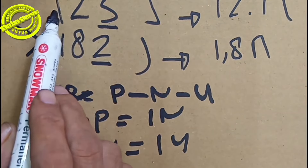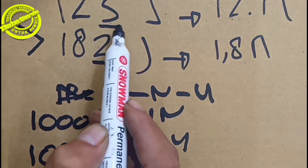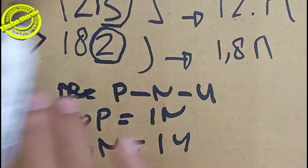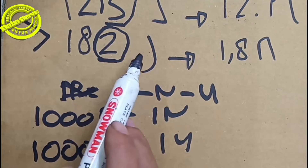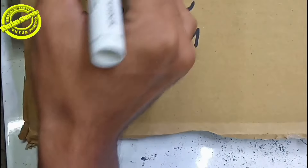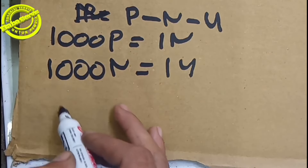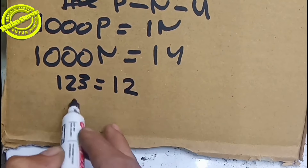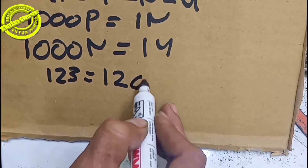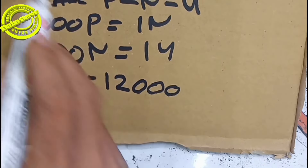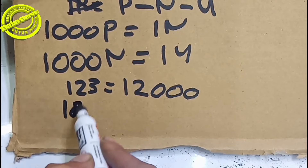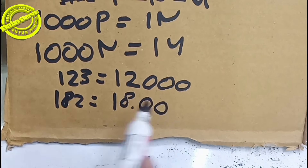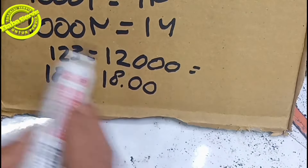Bukan angka nomor tiga, tapi angka yang ketiga. Pada kode tiga digit kapasitor, angka yang ketiga adalah yang menyatakan banyaknya bilangan nol. Itulah mengapa '123' lebih besar dari '182'. Jika dijabarkan: '123' = 12 dengan tiga buah nol (12.000 Pico), dan '182' = 18 dengan dua buah nol (1.800 Pico).